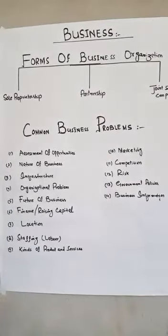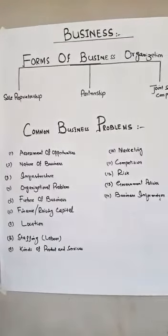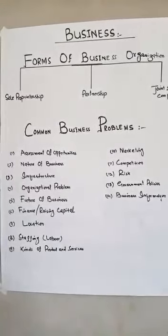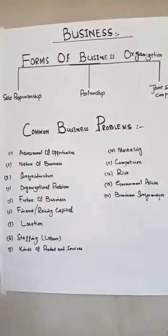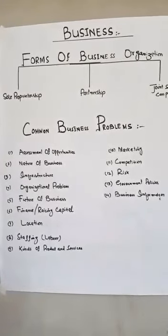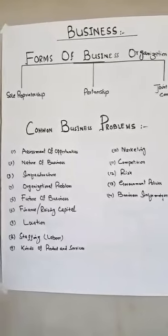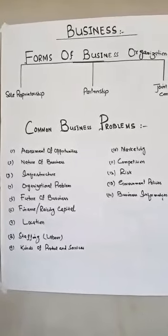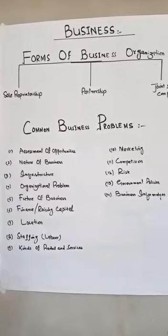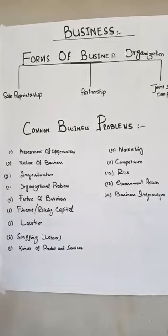Number two is nature of business. When starting a new business, the businessman has to decide the nature or type of business. He may choose wholesaling, retailing, or export and import. His selection is totally dependent upon the amount of capital available.